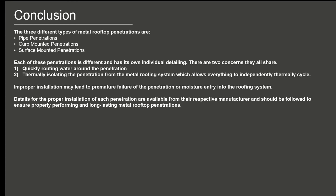To recap: the three types of metal roof penetrations are pipe penetrations, curb mounted penetrations, and surface mounted penetrations. While each is different with its own individual detailing, they share two common concerns: quickly routing water around the penetration, and thermally isolating the penetration from the metal roofing system to allow everything to independently thermally cycle. Improper installation may lead to premature failure of the penetration or moisture entry into the roofing system. Details for proper installation of each penetration are available from their respective manufacturers and should be followed to ensure properly performing and long-lasting metal rooftop penetrations.